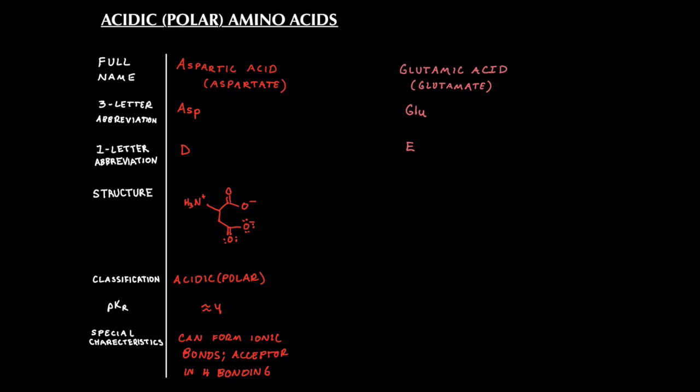And aspartic acid and glutamic acid are both acidic amino acids. So this is one way you can chunk the memorization of your acidic amino acids together is remembering that D and E are together in the alphabet. And aspartic acid and glutamic acid are both acidic polar amino acids.